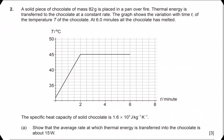Hello guys, welcome to this new video. This is going to be question 2 in the May 2023 timezone 1 paper 2. We are told that a solid piece of chocolate of mass 82 grams is placed over fire, thermal energy is transferred to the chocolate at a constant rate, and the graph shows the variation with time t of the temperature of the chocolate. At the end of 6 minutes, the chocolate has completely melted.